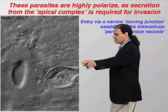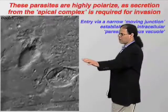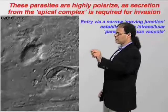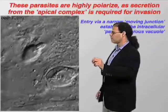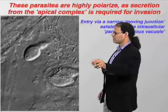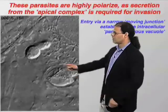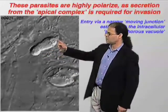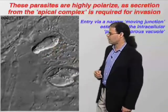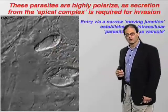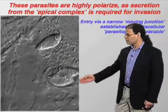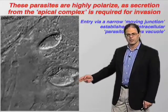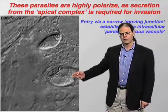Here you can see a single parasite as it moves along, gliding over the surface of cells. And now watch — it stops, and at this point it would be secreting proteins out of the rhoptries as it penetrates into the host cell through this narrow constriction of a moving junction, establishing that intracellular parasitophorous vacuole within which the parasite will live and replicate. Here are two more parasites — the progeny of one parasite that had invaded — living within this cell.